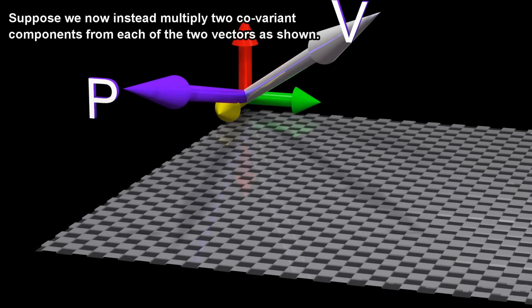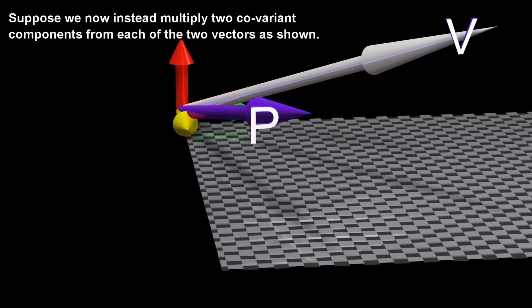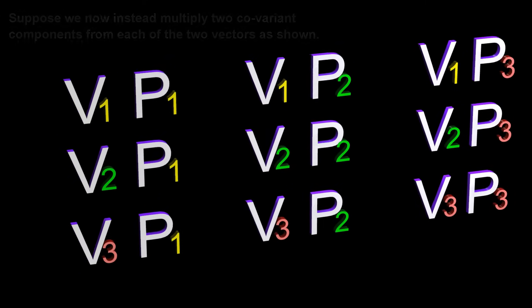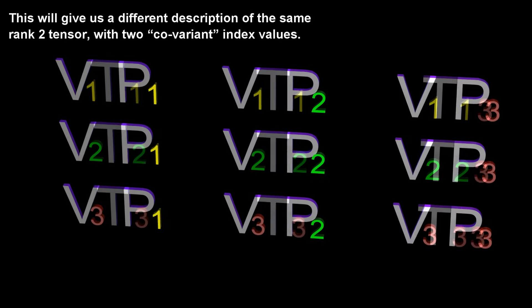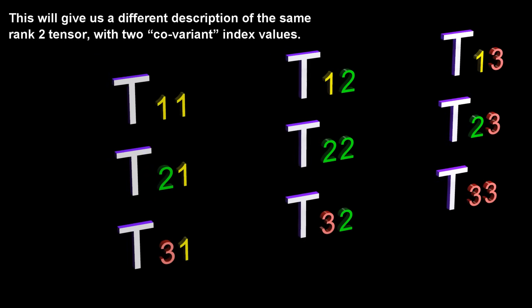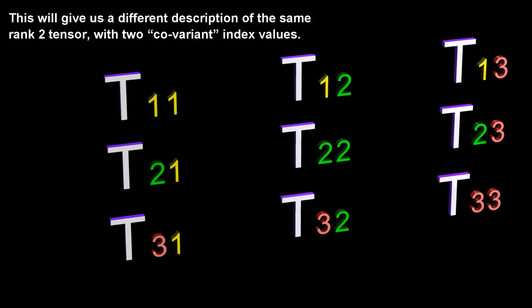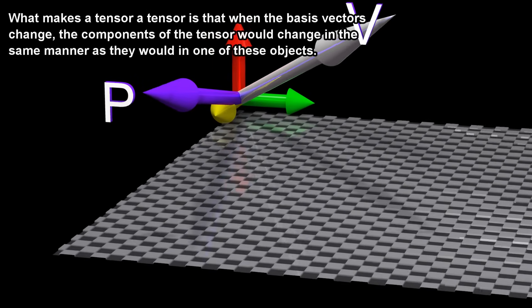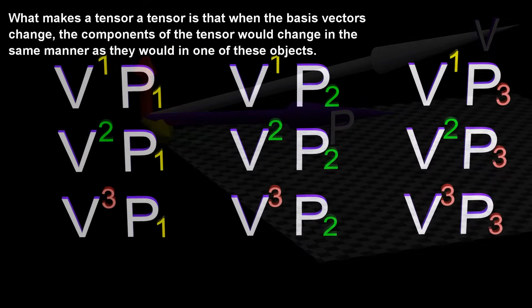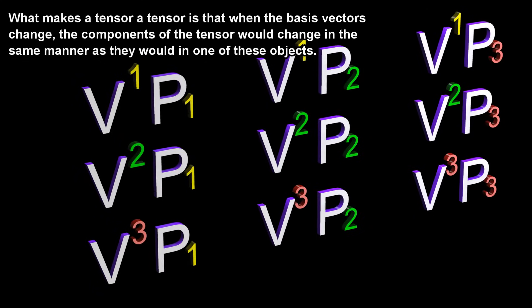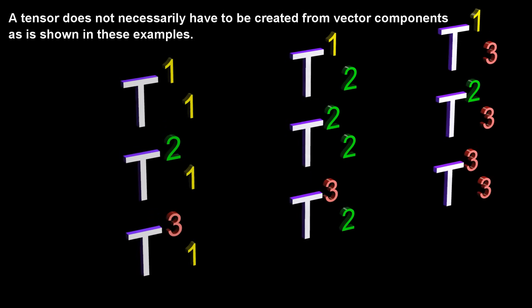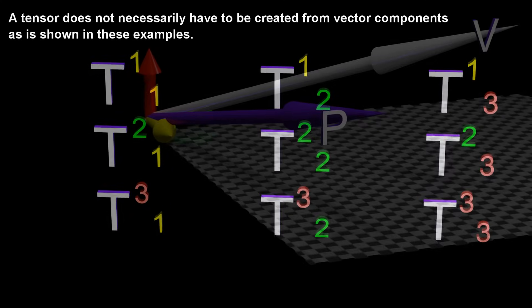Suppose we now instead multiply two covariant components from each of the two vectors as shown. This will give us a different description of the same rank 2 tensor, with two covariant index values. What makes a tensor a tensor is that when the basis vectors change, the components of the tensor would change in the same manner as they would in one of these objects. A tensor does not necessarily have to be created from vector components, as is shown in these examples.